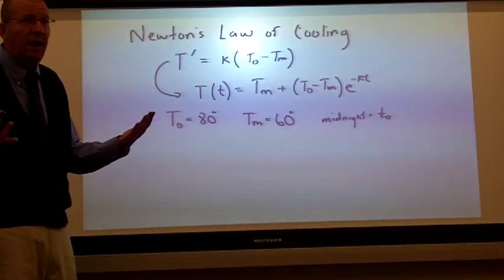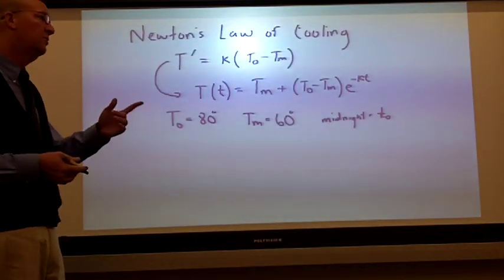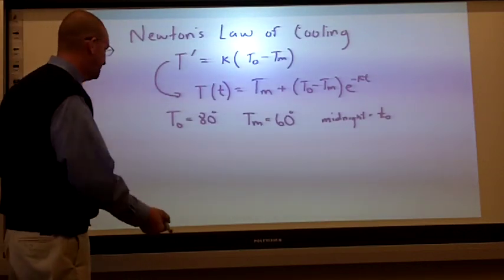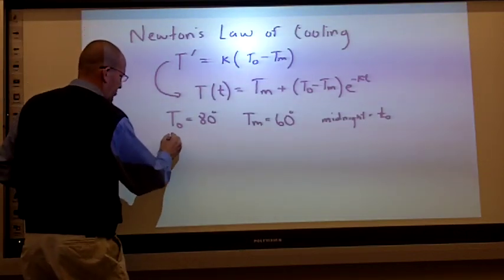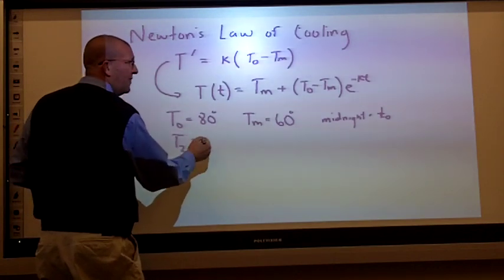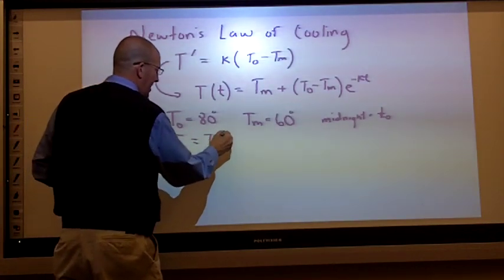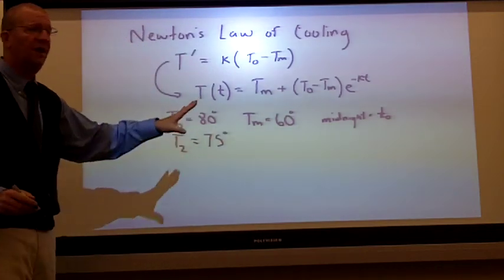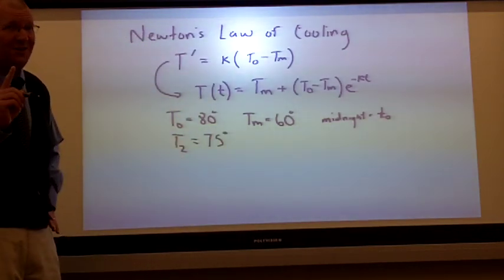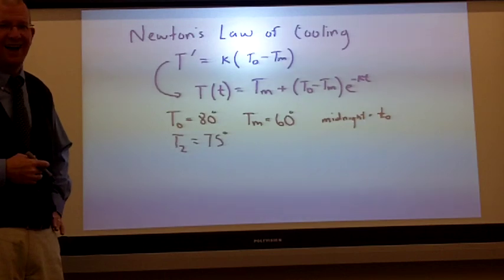How do we figure out when it died? Well, the first thing we're going to do is we're going to wait two hours. And we're going to take the temperature of the body, T sub 2. And we're going to find that to be 75 degrees. Now, this is enough information for us to determine when the body died.